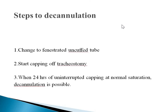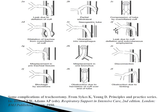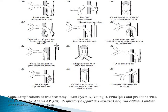The steps of decannulation: first change to a fenestrated uncuffed tube so the patient can tolerate breathing without the cuff, then start capping off the tracheostomy. When 24 hours of uninterrupted capping is tolerated at normal saturation, decannulation is possible. Complications that can occur include leak due to cuff deflation, leading to air leak and micro-aspiration, and partial withdrawal of the tube.